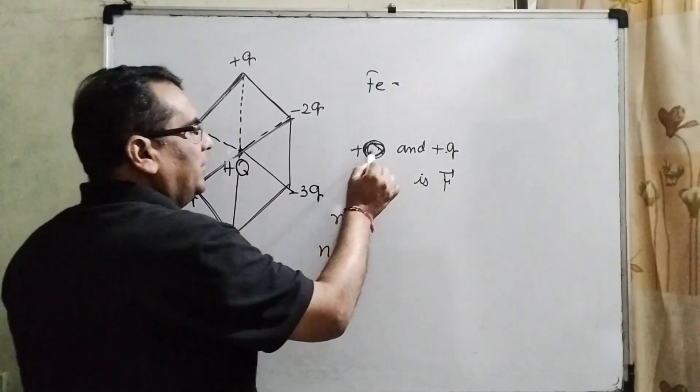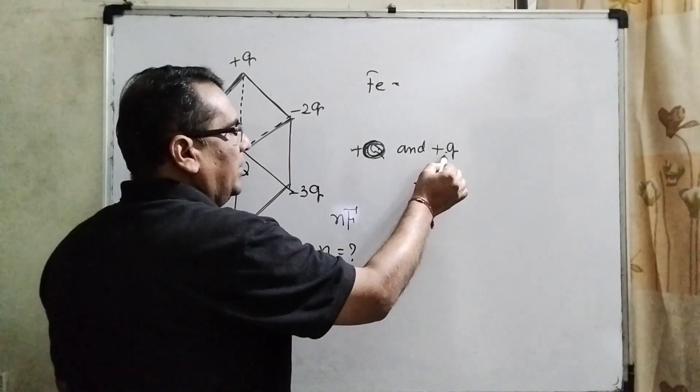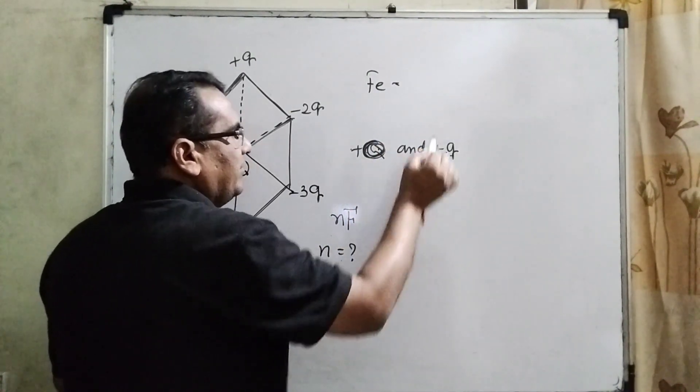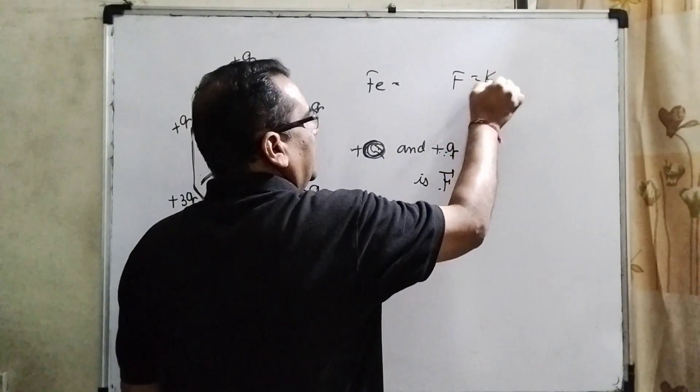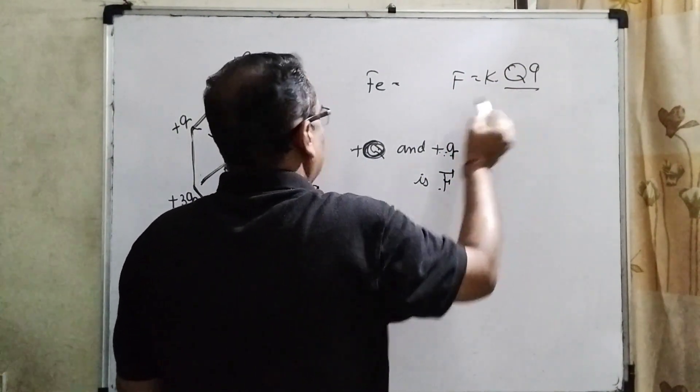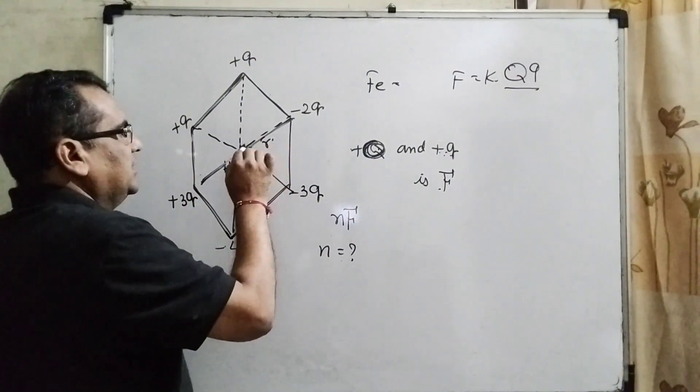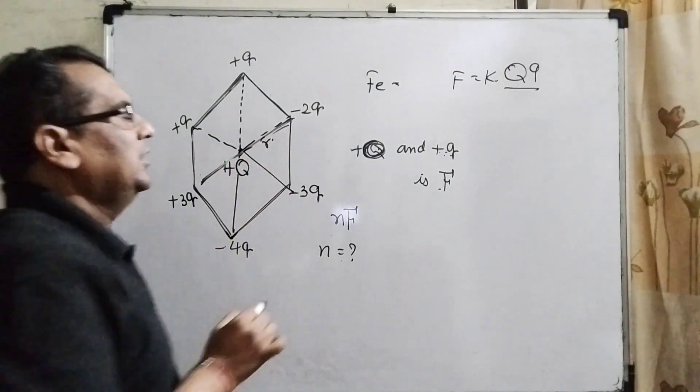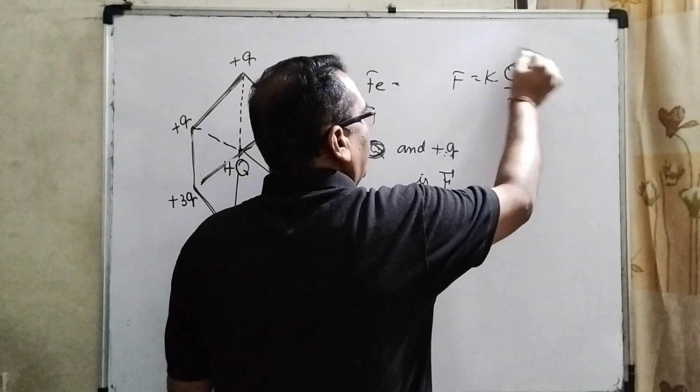We have given already the force applied between capital Q and plus small q is F. It means F equal to k into capital Q small q and the distance. Let's consider that distance from the center is r. So, here r square.